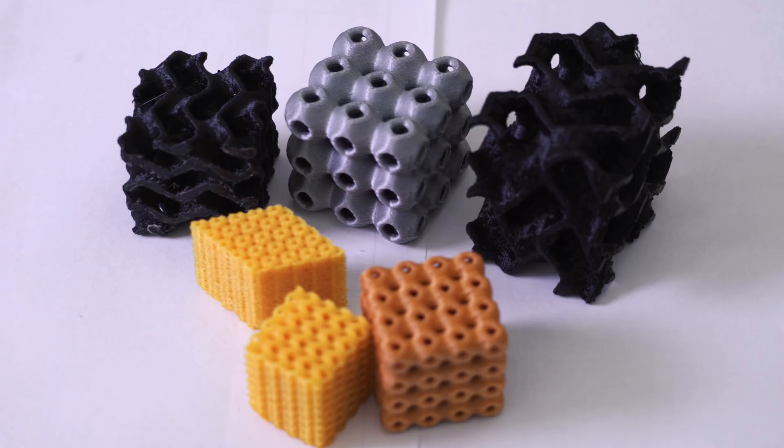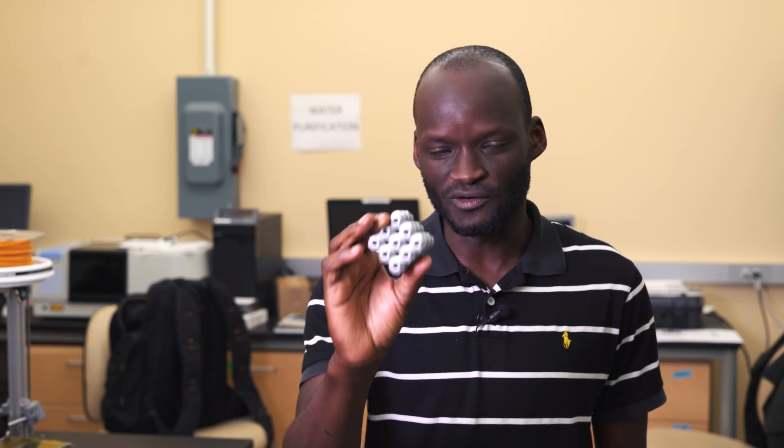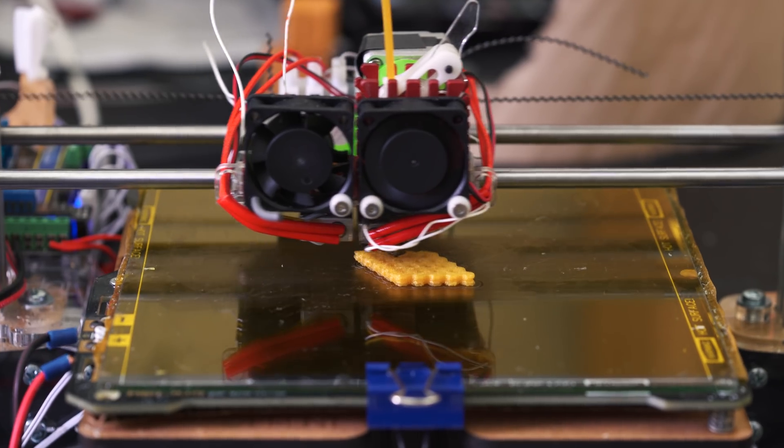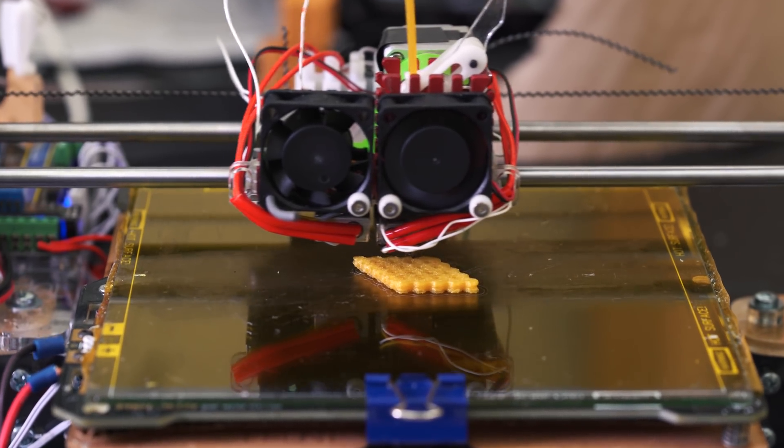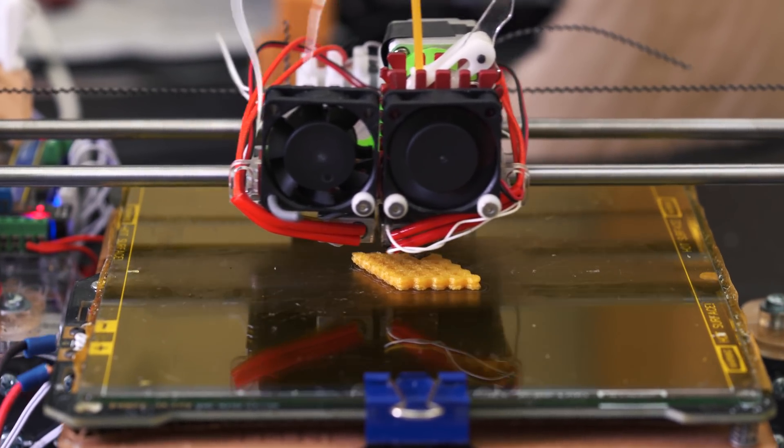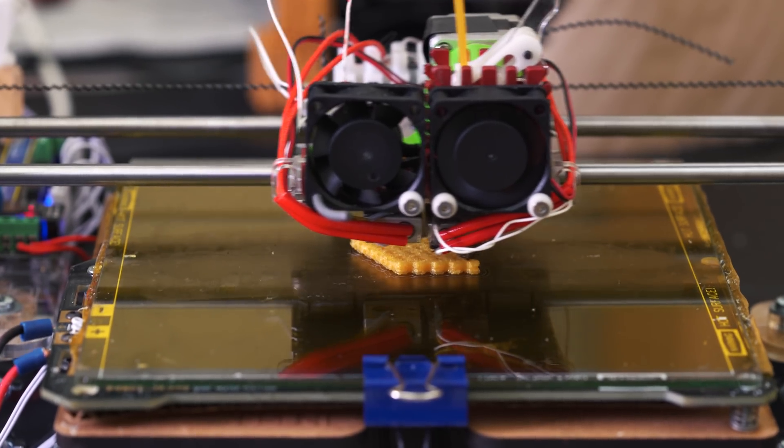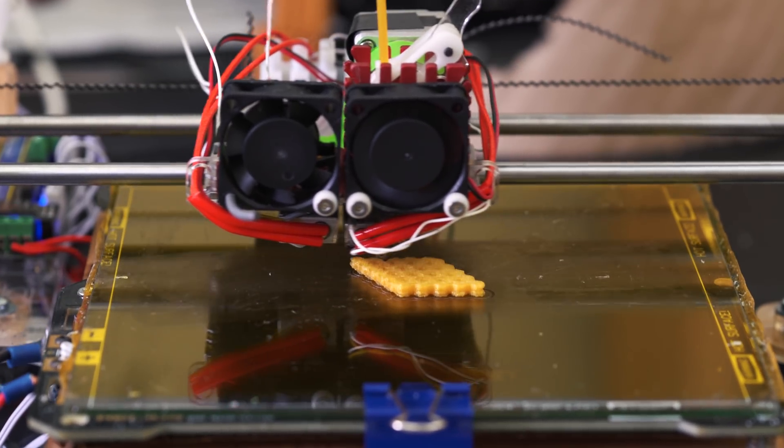For instance, if you print the same cubic structure without the Schwarzite morphology, you'll find the weight is double what I'm holding in my hands. That's why we've been trying to push as much as possible to make as many of these types of structures as possible.